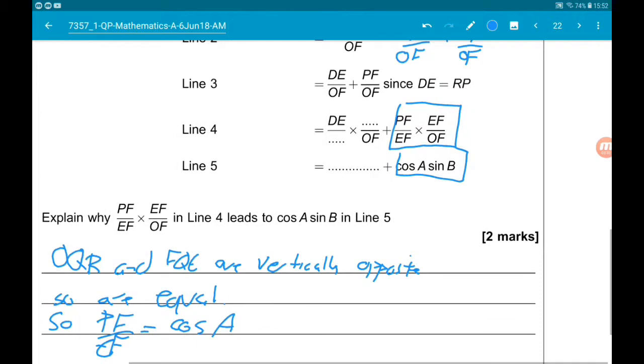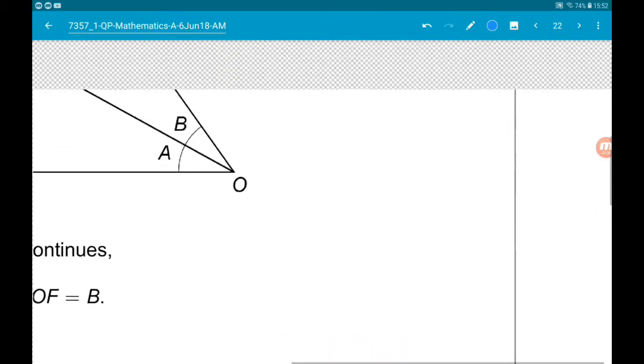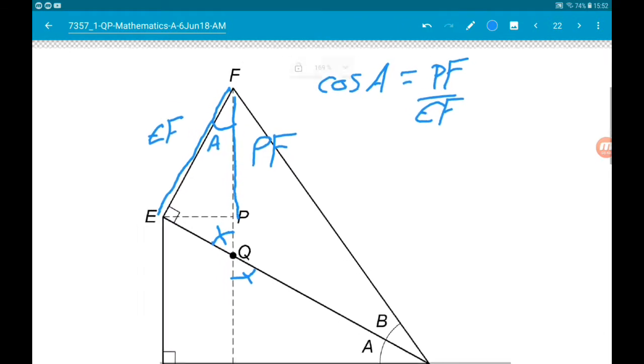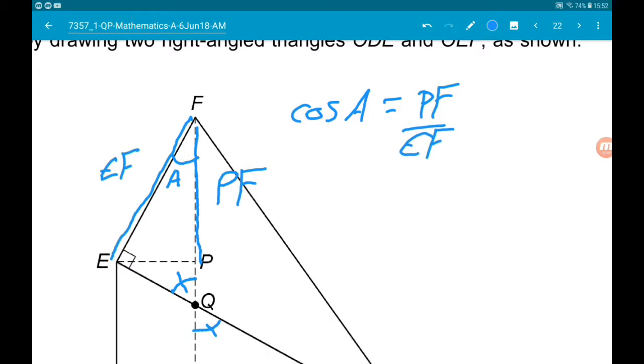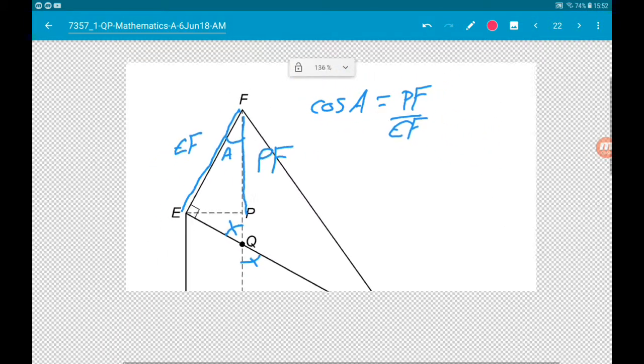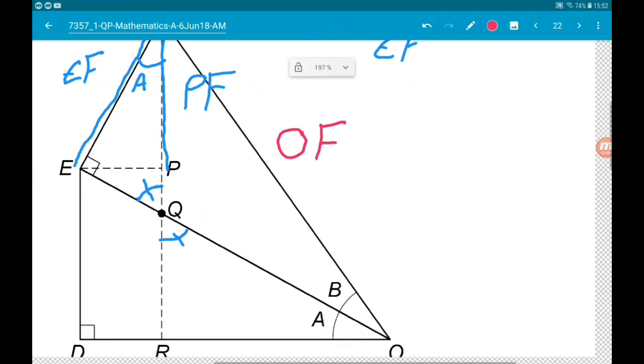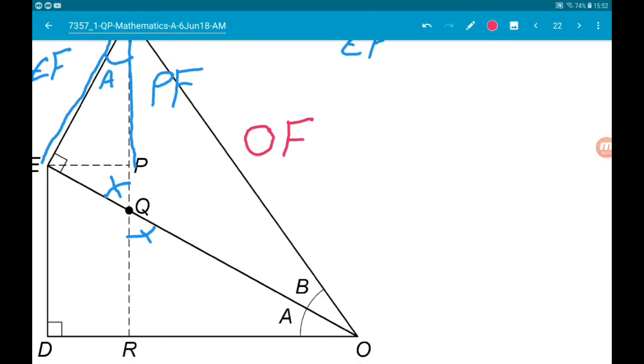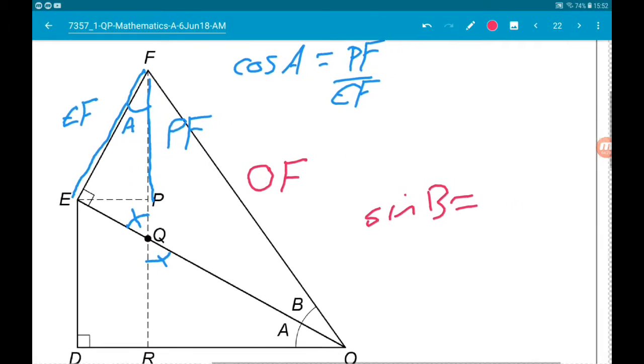Okay, and now we need to see if we can do something similar for EF over OF. So EF over OF. So we know that EF is this line here. And we know that OF is this line here. Now then, we know that that's a right angle triangle. So sin of B would equal the opposite, which is EF over my hypotenuse OF.